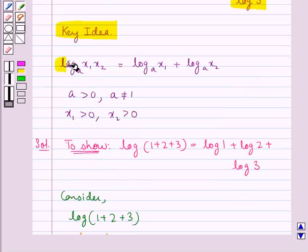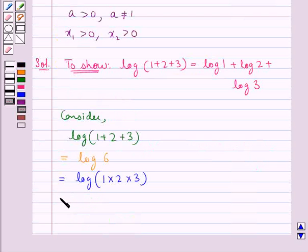Now, using this key idea where log of a product to any base equals the sum of the logs of the factors to the same base, we get this equals log 1 plus log 2 plus log 3.